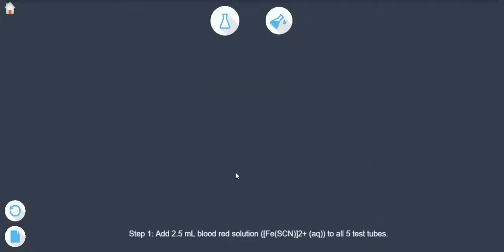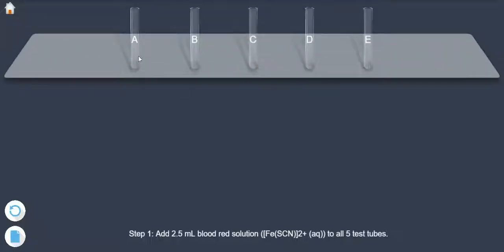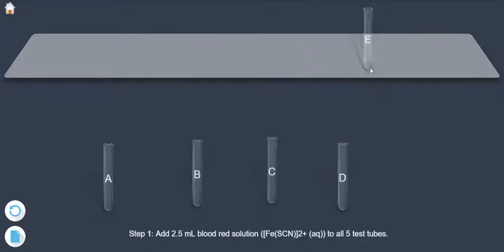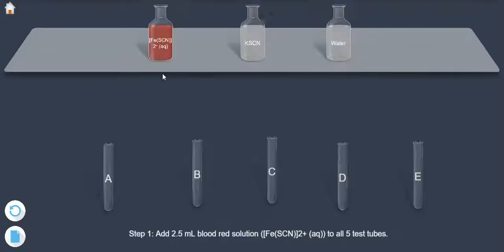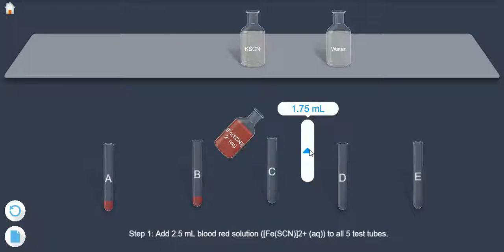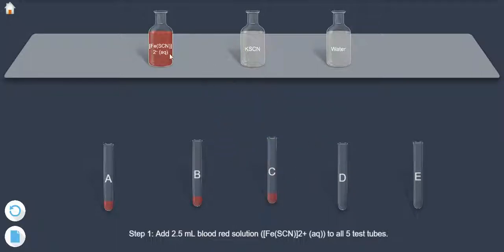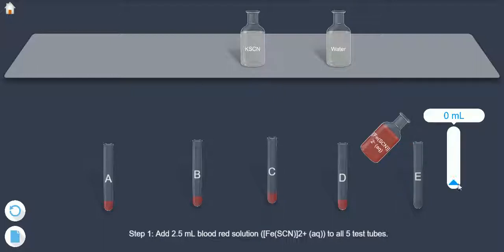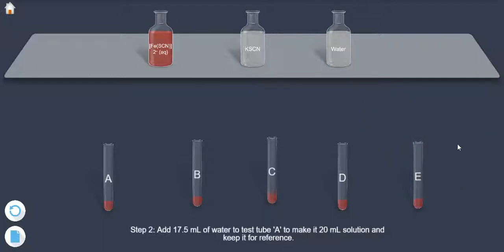Step 1. Add 2.5 ml blood red solution to all 5 test tubes. Step 2. Add 17.5 ml of water to test tube A to make it 20 ml.